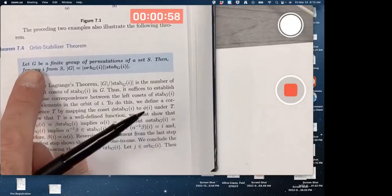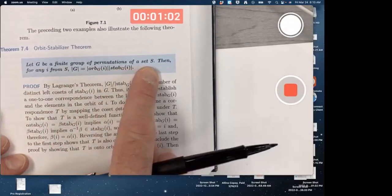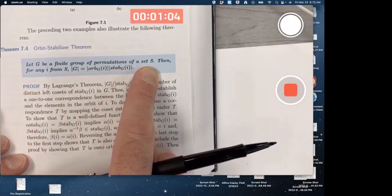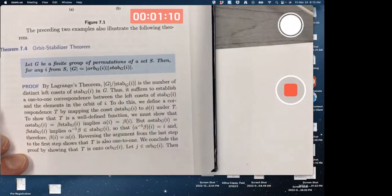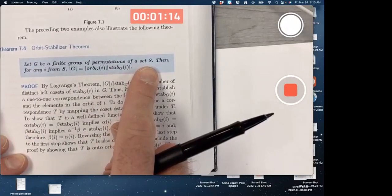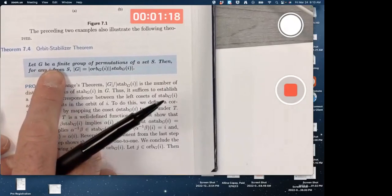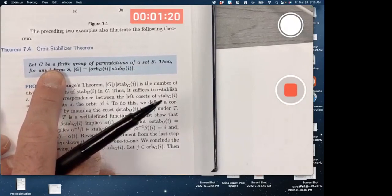The Orbit-Stabilizer Theorem says that we're letting G be a finite group of permutations on a set S. So the elements of G are one-to-one and onto functions from S to itself. They are permuting the elements of S. It doesn't say S is a finite set. Evidently, S could be infinite. But G, the group of permutations, the number of permutations that you've got is finite.